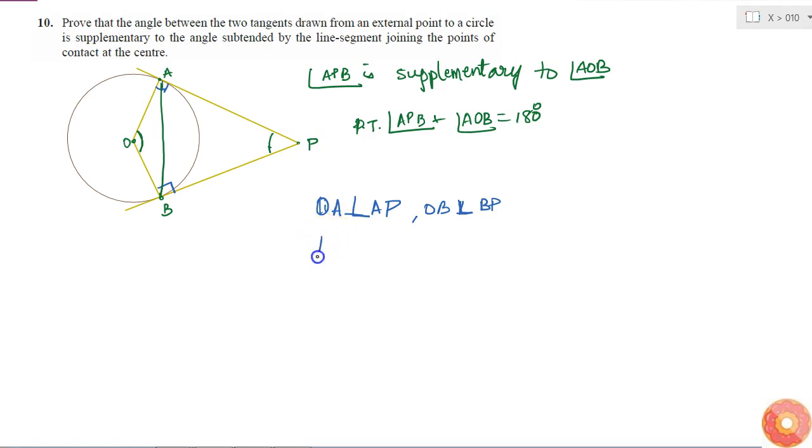So this means that angle OAP is equal to angle OBP is equal to 90 degrees, correct? Perpendicular means the angle between the two lines is 90 degrees.